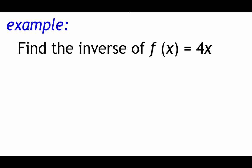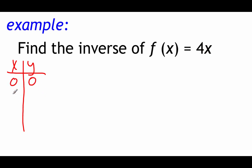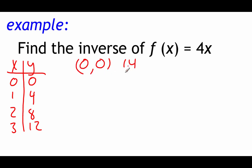As far as ordered pairs, remember we're plugging in x values and getting y values. I'm going to make a quick x and y chart to build some of those ordered pairs. If we plug in 0, well 4 times 0 is 0. If we plug in 1, we get 4. If we plug in 2, we get 8. If we plug in 3, we get 12. So those ordered pairs are 0, 0; 1, 4; 2, 8; and 3, 12.